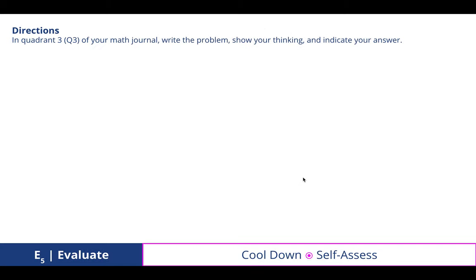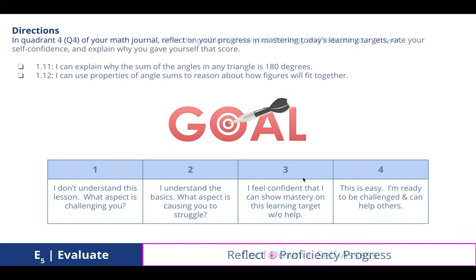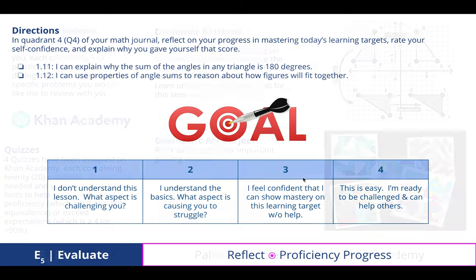There is no cool down activity for today because we are taking that time to create our own and investigate our own tessellations, which will lead to your geometric art project. In quadrant four of your math journal, reflect on your progress in mastering today's learning targets, rate your self-confidence, and explain why you gave yourself that score.